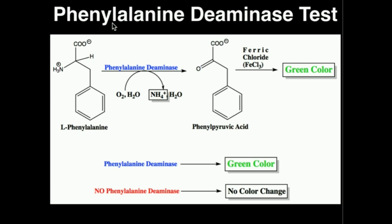The phenylalanine deaminase test is an important biochemical test in the identification of two genera within the family of bacteria known as Enterobacteriaceae. Those genera are known as Proteus and Providentia. These two genera will test positive for the phenylalanine deaminase test.